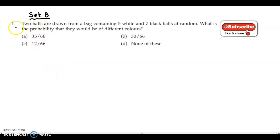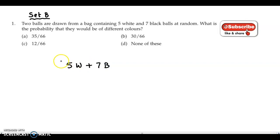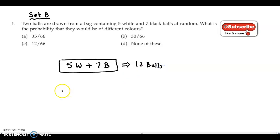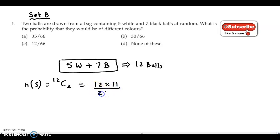Let's discuss the first question of upset B. Two balls are drawn from a bag containing five white and seven black balls at random. What is the probability that they would be of different colors? So here we have five white balls and seven black balls, so in all we have twelve balls. We have two balls selected, so the sample space would be 12C2. We get 12 into 11 upon 2 into 1.